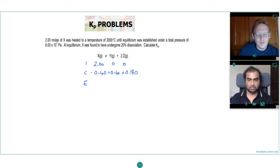So what have we got at equilibrium? 2 take 0.4 is 1.6, nothing add 0.4 is 0.4, and nothing add 0.8 is 0.8.